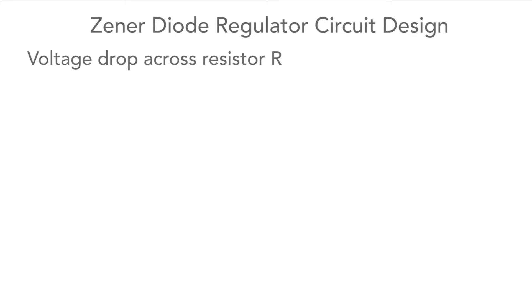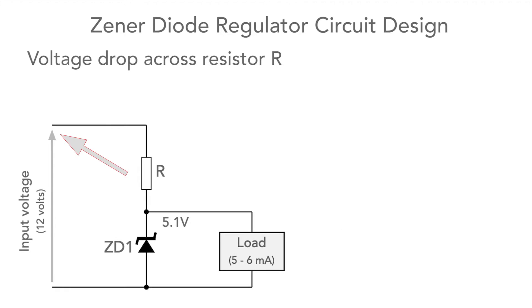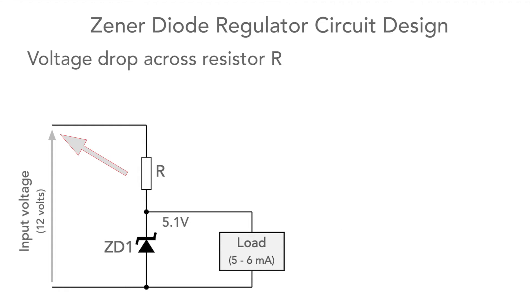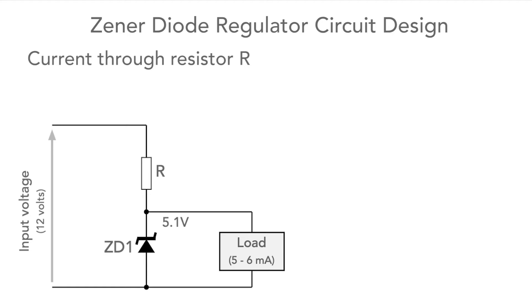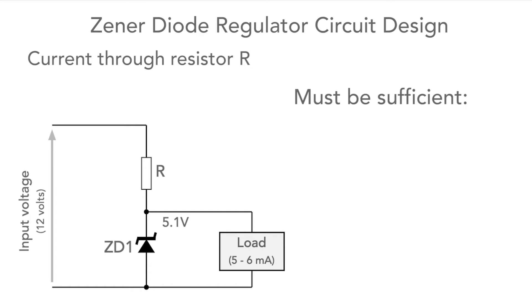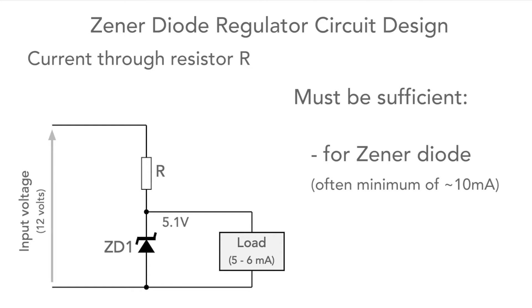The first stage in the design is to work out the voltage drop across the resistor. This is simply the incoming voltage minus the Zener diode voltage: 12 minus 5.1 which is 6.9 volts — to simplify the calculations let's say it's 7 volts. Next we need to work out the current going through the resistor. This must be sufficient to enable the Zener action to occur with the diode, and often about 10 milliamps is a good starting point.